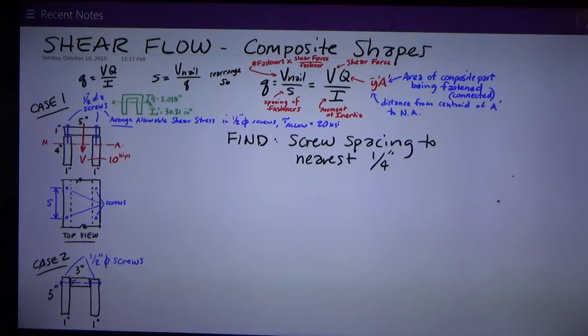We've got a shear flow problem that's really a third part of a problem that I've got two more videos on. This one is on shear flow, which is something that we use for composite shapes, where we build up a section or a cross-section of a beam by putting parts and pieces together and fastening or connecting them together.